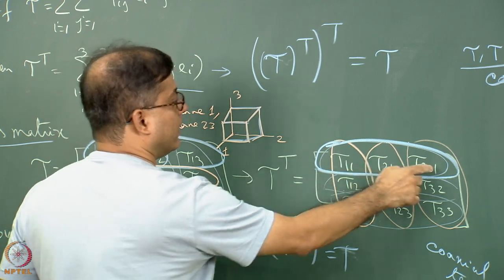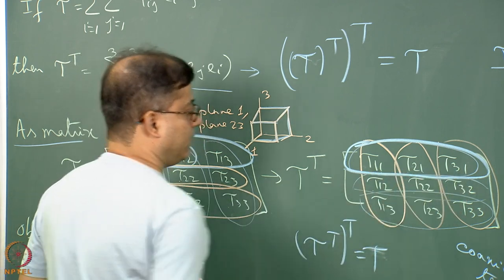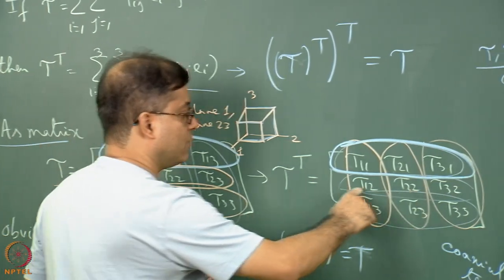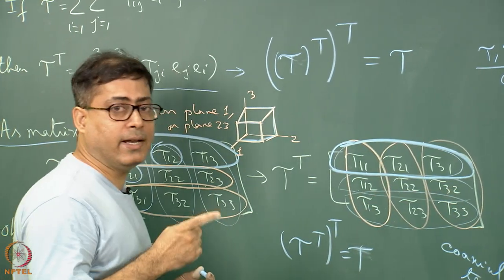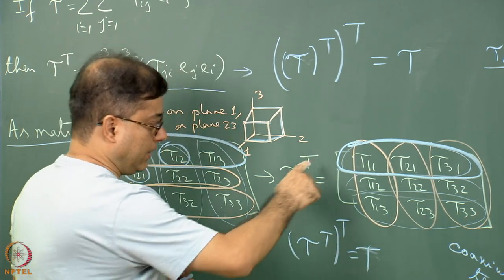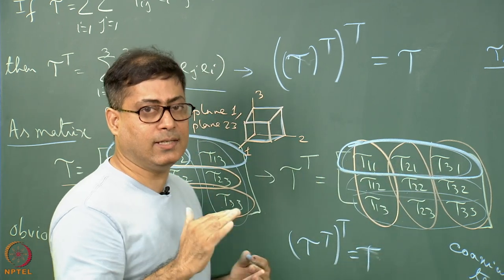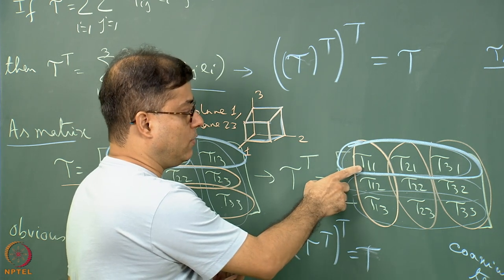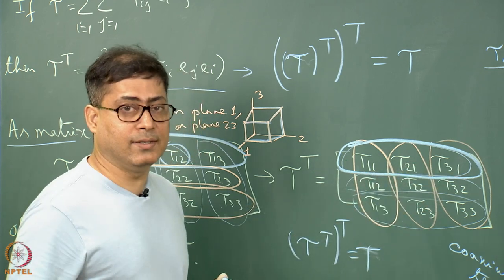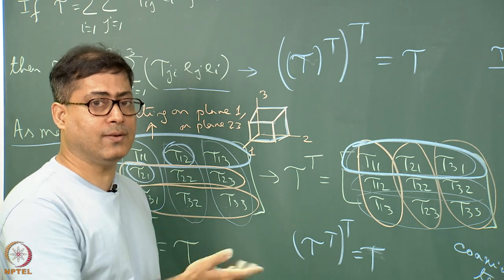For the transposed matrix, the second row indicates all stresses acting along direction 2, and the third row along direction 3. For example, in the first row of tau^T, tau_11 acts on plane 1, tau_21 on plane 2, and tau_31 on plane 3 — all directed along direction 1. Understanding the rows and columns in this way will be useful in subsequent work.